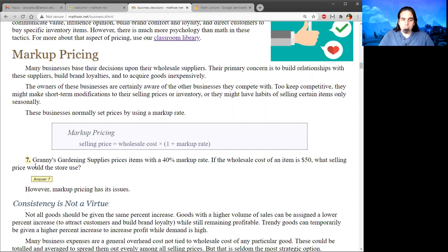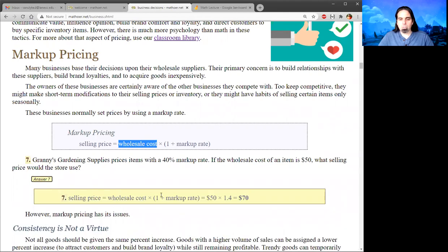So problem seven, Granny's Gardening Supplies uses a 40% markup rate. So we're going to plug in here and make a 1.4 out of this whole thing. If the wholesale cost is 50 bucks, then what's the selling price the store should use? So they start with what they pay their supplier, the 50, multiply it by 1.4, 40% more than 100%, and they get 70 bucks.